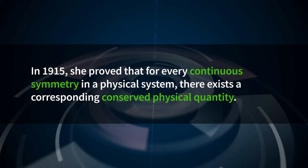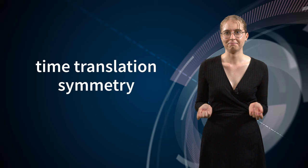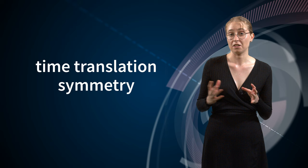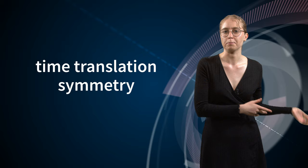It all has to do with one of the most important and fundamental principles of modern-day theoretical physics, called Noether's theorem. Emmy Noether was a brilliant German mathematician who lived at the turn of the 20th century. In 1915, she proved that for every continuous symmetry in a physical system, there exists a corresponding conserved physical quantity. In other words, if you know that there is a continuous symmetry, you know that some value or property of the system will stay the same over time, even if changes happen in the system. Noether's theorem transformed the way physicists approach problems, and ultimately became central to many of the last century's most important physics theories.